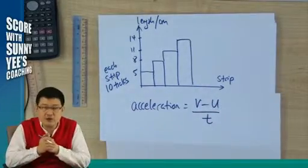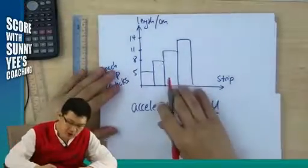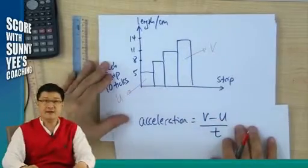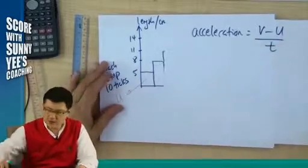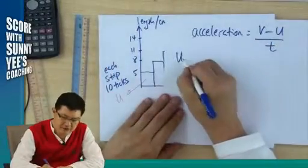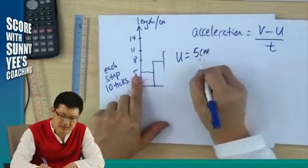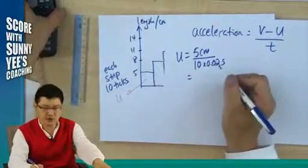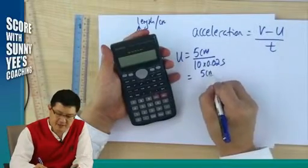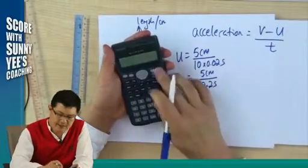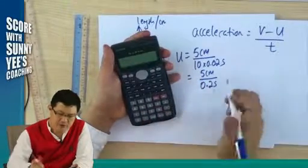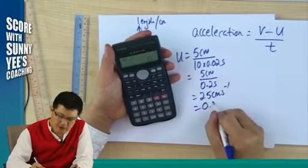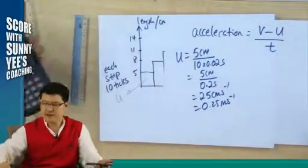It is up to you which initial you are going to use. I can take this as the initial and this will be the final. The initial velocity u will be 5 cm divided by 1 strip which has 10 ticks — that is 10 times 0.02 second. So that gives 5 cm over 0.2 second, which equals 25 cm per second, or 0.25 m per second.